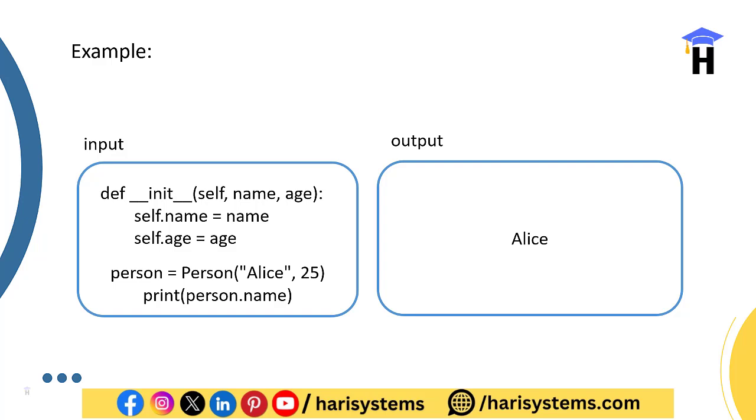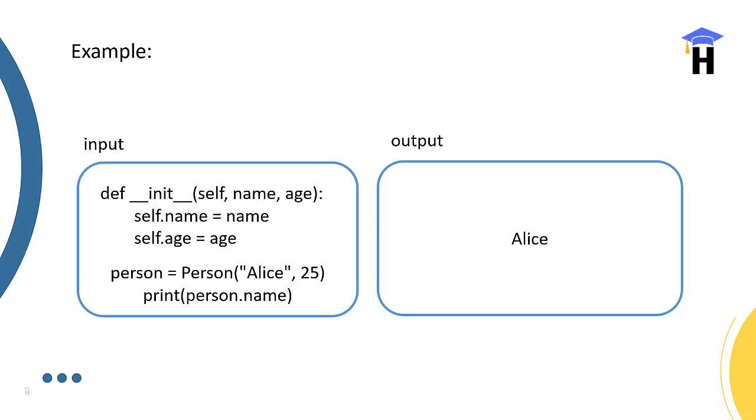Best example here: __init__ method with self, name parameters—two parameters are declared here. Person, when we are calling and passing a particular __init__ method, the output if you see like person.name parameter Alice only will come. If you specify person.age, age only comes. What you are calling and accessing, that particular output you will see.